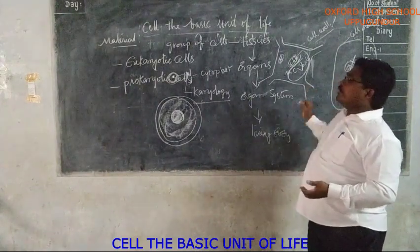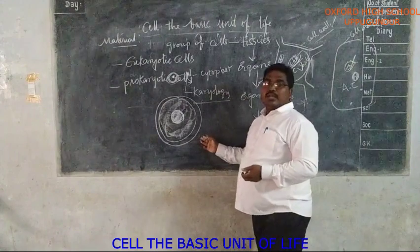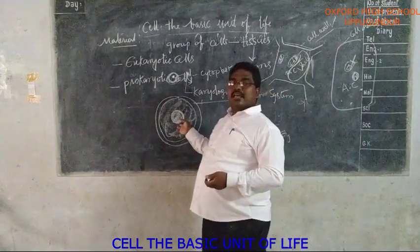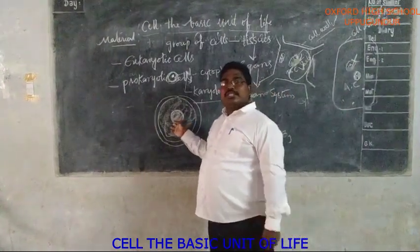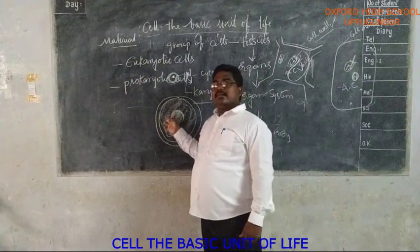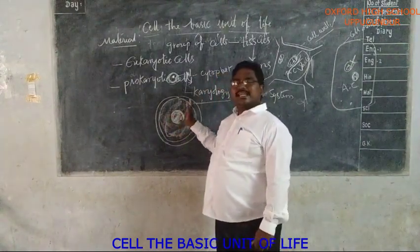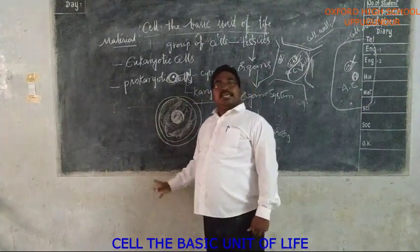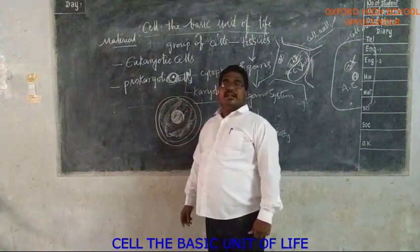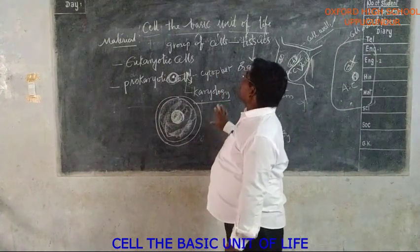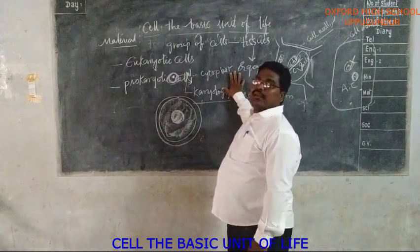To summarize the important points about the nucleus: it is the cell's control room and the largest and most distinct part. It controls all characteristics of an organism, contains all genetic information, and is closely involved in cell division. That is enough for today — thank you, students.